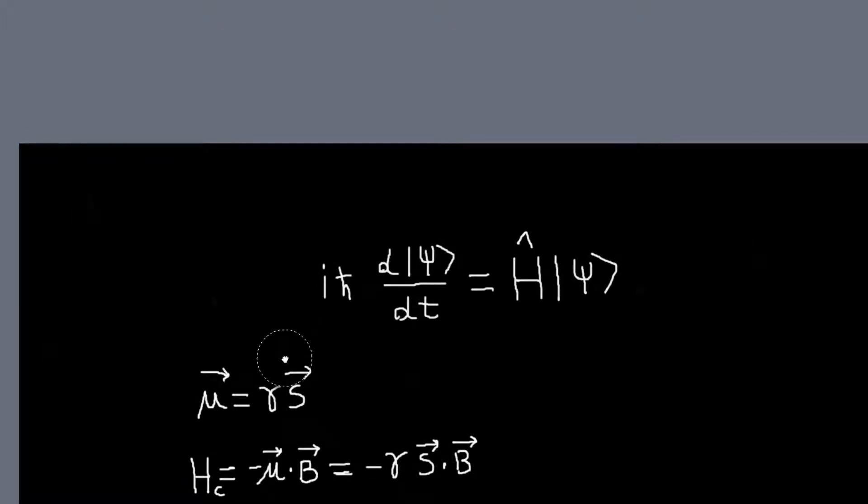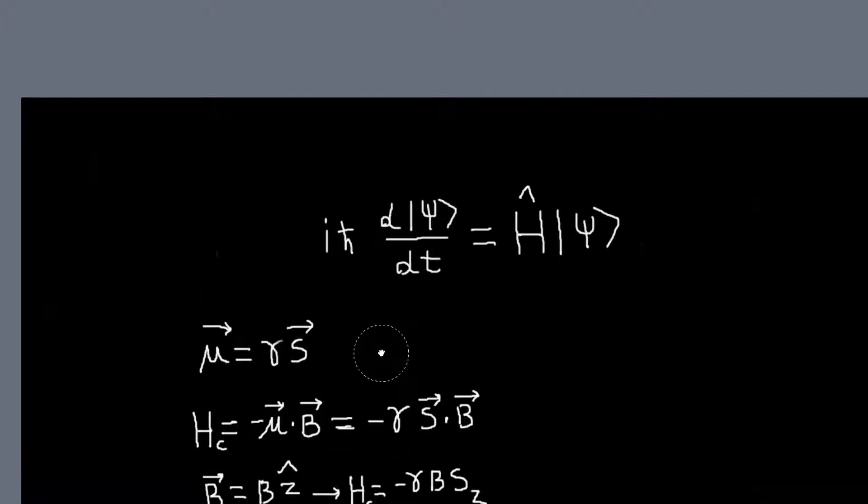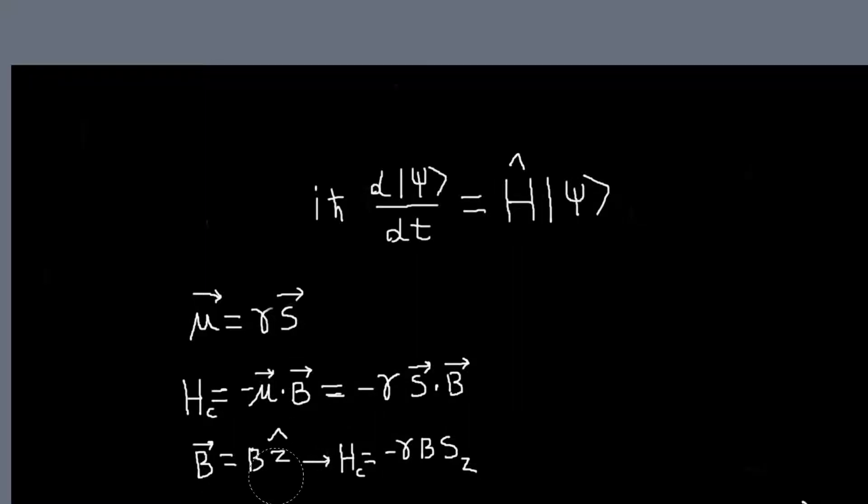So we can write down the classical expression, the Hamiltonian for a magnetic dipole in a magnetic field. It will have a potential energy that is minus mu dot B. So basically it wants to align itself with the magnetic field. If mu is along B, then the energy is minimized. If it's anti-parallel to B, then it's maximized. And using this expression here, we can write this as minus gamma S dot B. And then I'm free to choose my magnetic field to be along the z direction. And in that case, our Hamiltonian would just be minus gamma B times the z component of the angular momentum.